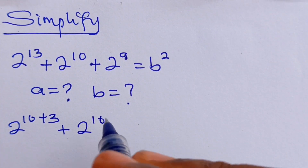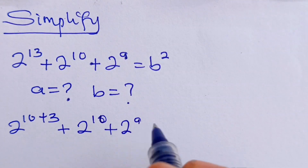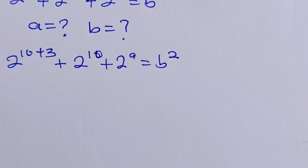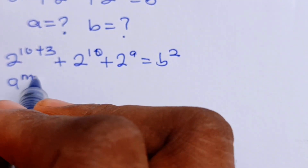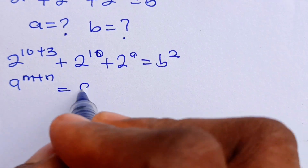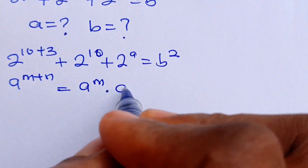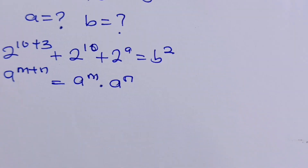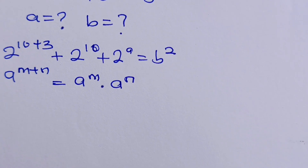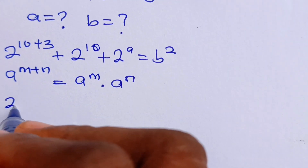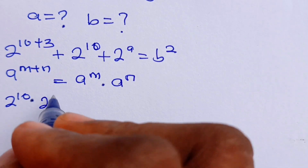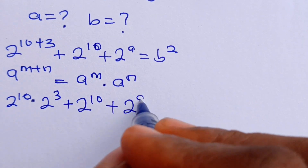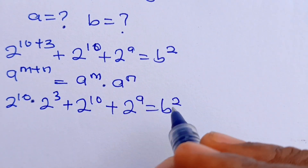Plus 2 to the power of 10 plus 2 to the power of A is equal to B squared. Now, remember that when you have A to the power of M plus N, that is equal to A to the power of M multiplied by A to the power of N. So that simply means we can express this as 2 to the power of 10 multiplied by 2 to the power of 3, plus 2 to the power of 10, plus 2 to the power of A is equal to B squared.